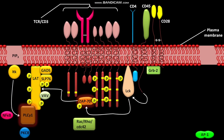Active PLC-γ1 breaks down PIP2, resulting in the release of IP3, which causes the release of calcium into the cytoplasm. PIP2 also undergoes hydrolysis to create DAG, so active PLC-γ1 causes both calcium release and the formation of DAG.